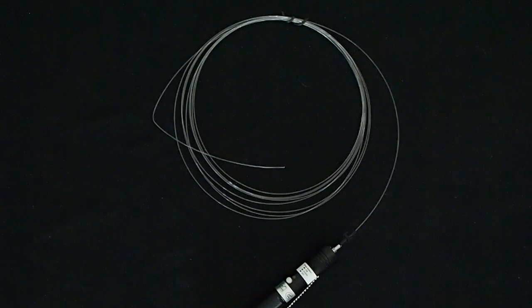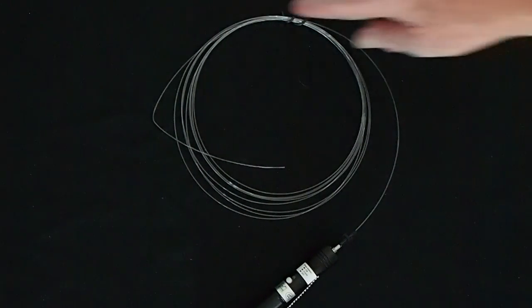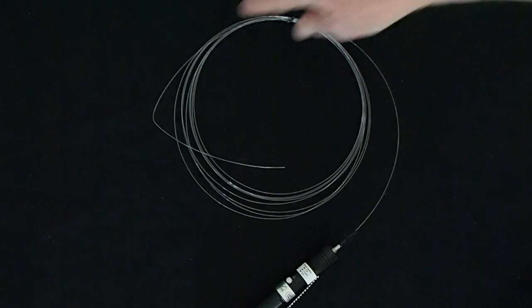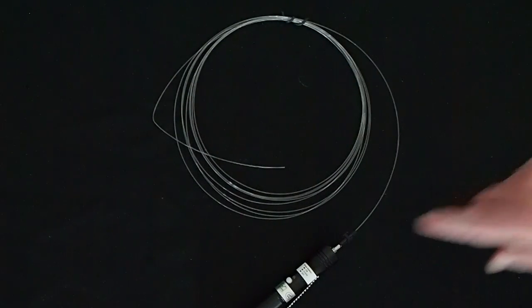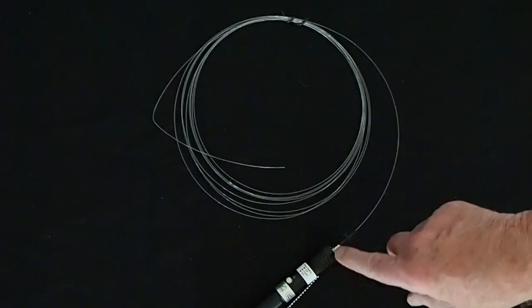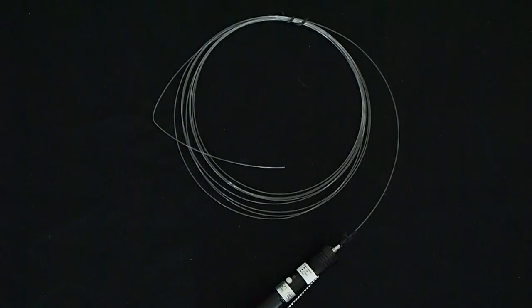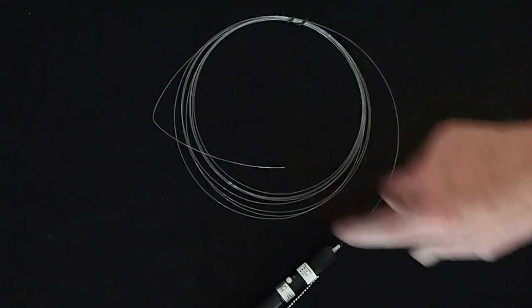To show you how optical fiber transmits light, I'm going to take this coil of large core plastic optical fiber and connect it into this device, which we call a visual fault locator. It's a high-powered red laser light that we can couple into the fiber. So let's turn it on.